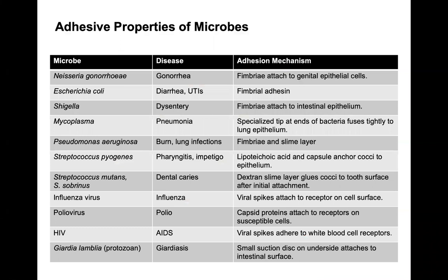Some examples of adhesive properties: Neisseria gonorrhoeae has fimbriae that attach to the genital epithelium. HIV has viral spikes that adhere to white blood cell receptors. These are all different types of examples of how adhesion enables infection.